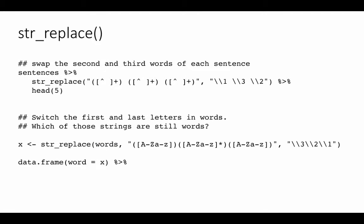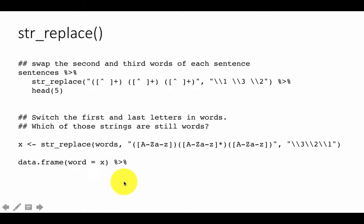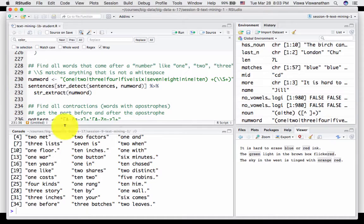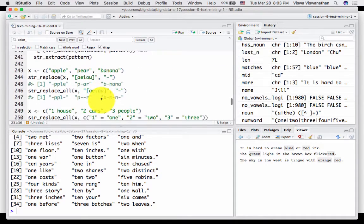Now what we want to do is find out which of these words in x still remain to be proper words — that is, those words also occur within the original words list. So we create a new data frame where word equals x, the transposed version. From our earlier discussion, we know we can do a semi-join with the words data frame. When you do the join, it is going to retain only those which are proper words. It will be interesting to see whether there are any such words which, when the first and last characters are replaced, continue to be proper words.